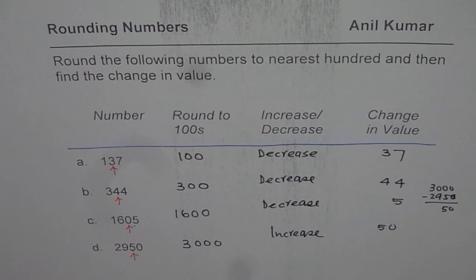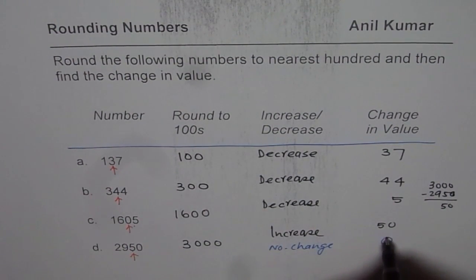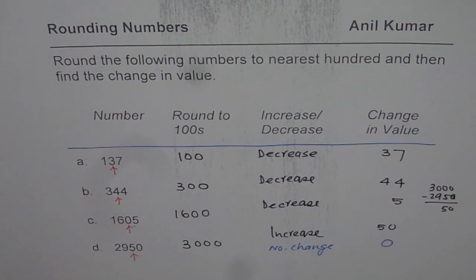So that is how you can round and also appreciate how the numbers can change when you round to hundreds. Now the question for you is to provide a number with no change. That is to say the change value is 0 when you round to 100. So that is the question for you to do.